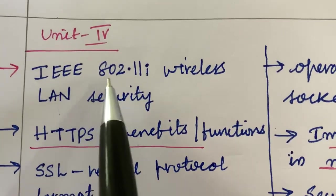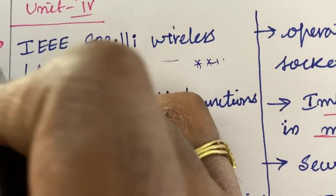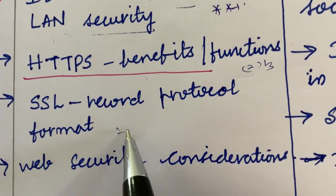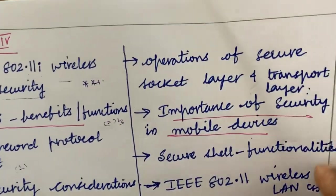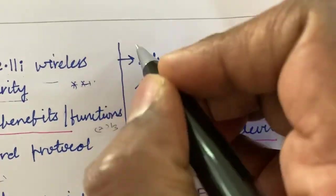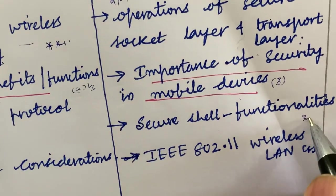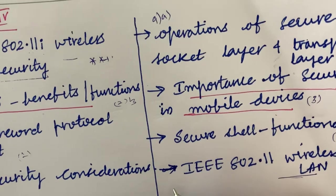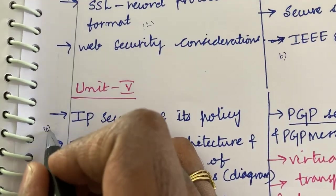Unit 4 is all about IEEE 802.11i wireless LAN security, which is a very important question expected in the 8th question slot. HTTPS benefits and functions may be a 2 or 3 mark question. SSL record protocol format is a 2-mark question. Web security considerations are also covered, appearing in 8A and 8B. For 9A and 9B, the operations of the Secure Socket Layer and Transport Layer Security are very important. Security in mobile devices may be a 3-mark question, and Secure Shell functionalities may be a 2-mark question. IEEE 802.11 wireless LAN explained in detail may appear in 9A or 9B.